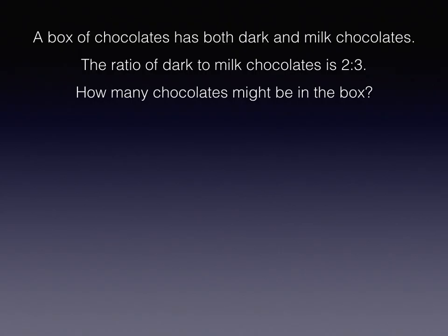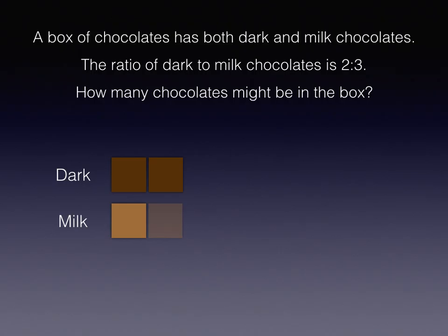A box of chocolates has both dark and milk chocolates. The ratio of dark to milk chocolates is 2 to 3. How many chocolates might be in the box? The first thing we want to realize is there are fewer dark chocolates than milk chocolates. In fact, for every 2 dark chocolates in this box, there are 3 milk chocolates.